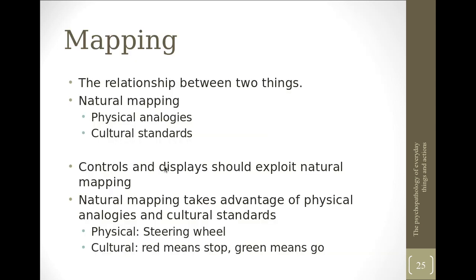The third is mapping. It means the relationship between two things — the natural relationship between two things. There may be a natural mapping because of two things: one is called physical analogies and the second is cultural standards. The controls we design for any interaction or interface — whether a UI or a display — should exploit natural mapping. Natural mapping takes advantage of physical analogies and cultural standards.